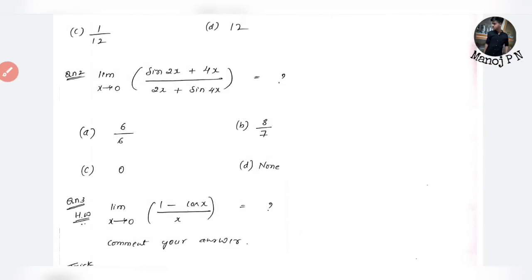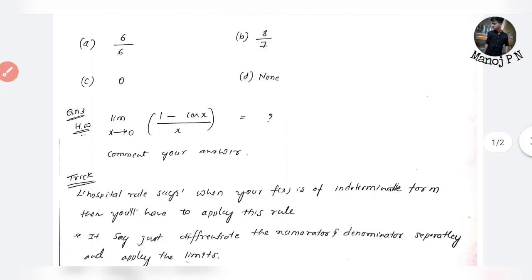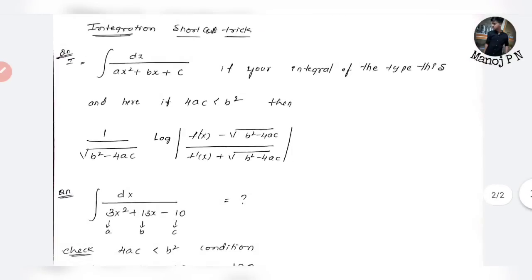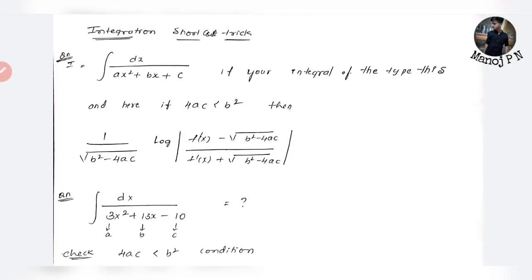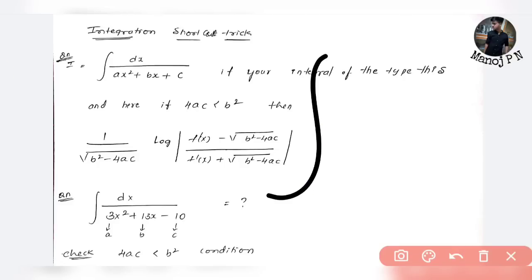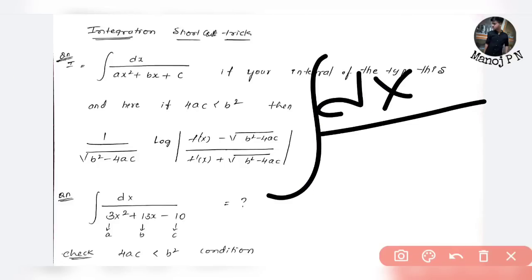Now let's do the integration trick. What is the integration trick? You have to use a direct formula — this is the most important trick. For a quadratic expression of the form ax² + bx + c, you can apply this type of formula.